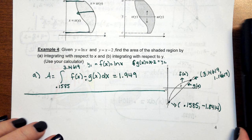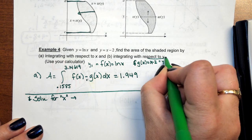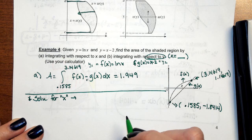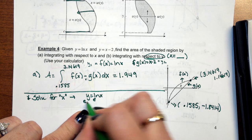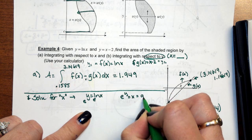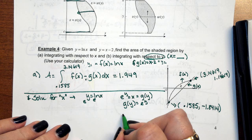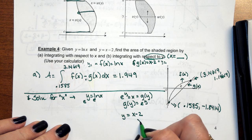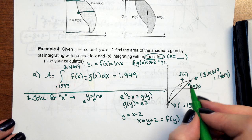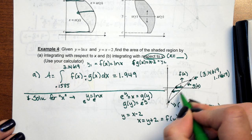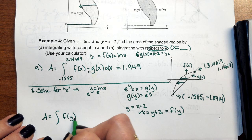Now to integrate with respect to Y, you first have to solve each equation for X. For Y equals natural log of X, raise both sides to base E: X equals E to the Y — call this G of Y. For Y equals X minus 2, add 2: X equals Y plus 2 — call this F of Y. Now we do right minus left. The function furthest to the right is the linear function, F of Y.